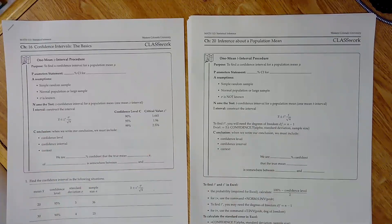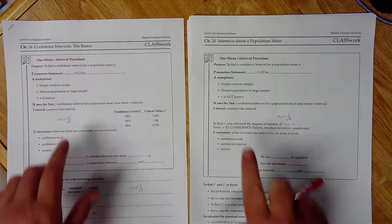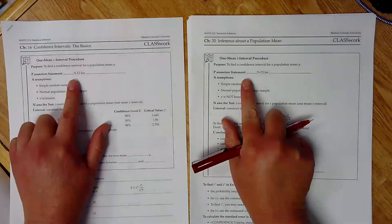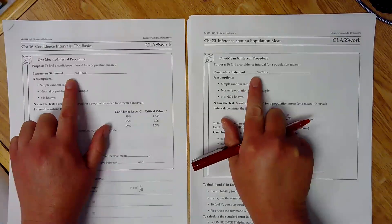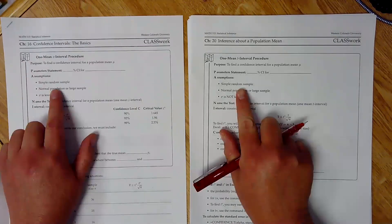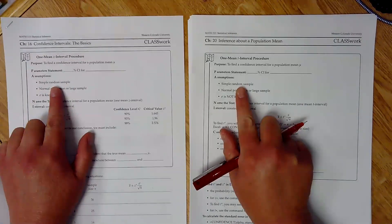So we're still looking at finding a confidence interval or a range of values for our population mean. And these start out the same. A parameter statement is we're looking for some sort of percent confidence interval. And then we have our assumptions and conditions. So two of these are the same. We have simple random sample.